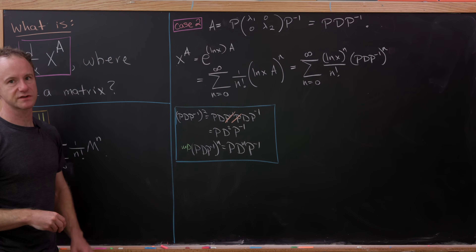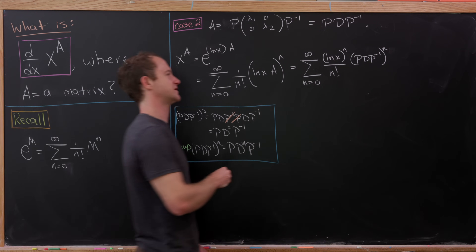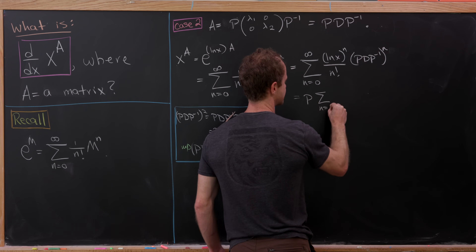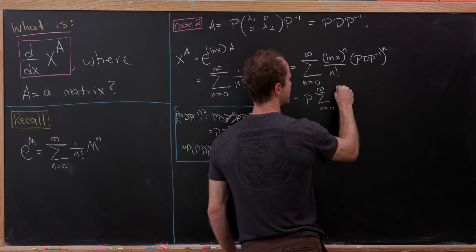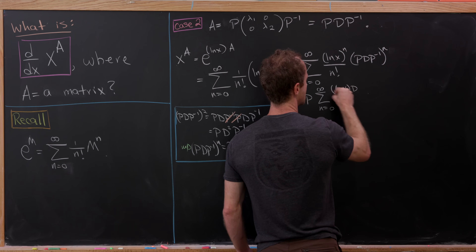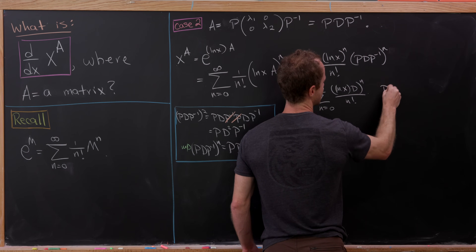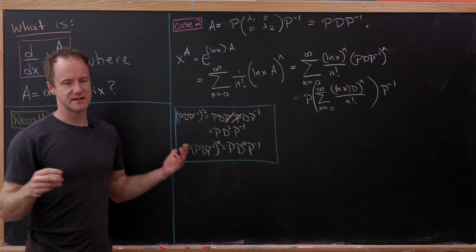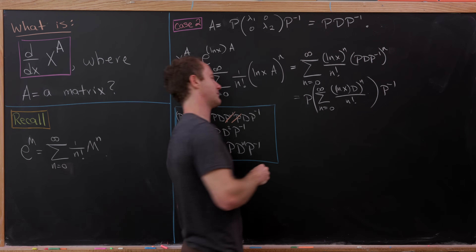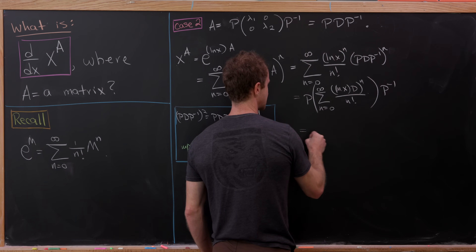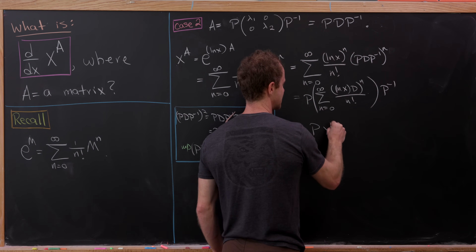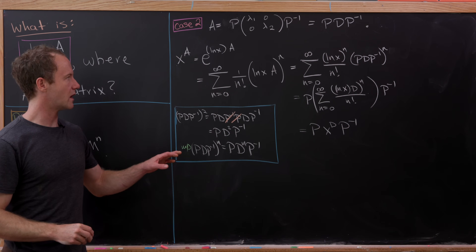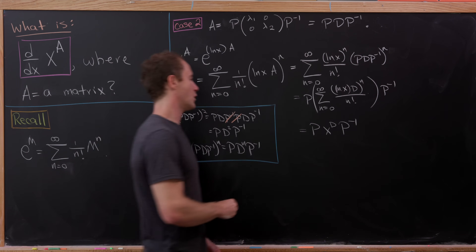Observing that (PDP⁻¹)² = PD²P⁻¹, and more generally (PDP⁻¹)^n = PD^nP⁻¹, we can factor P and P⁻¹ out of the sum. That leaves us with P times [the sum from n=0 to infinity of (ln(x)·D)^n / n!] times P⁻¹. By our diagonal matrix example, that sum is exactly x to the D.